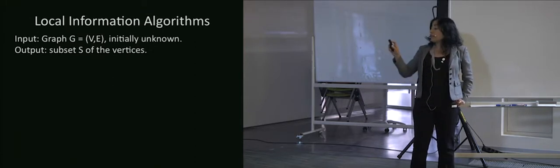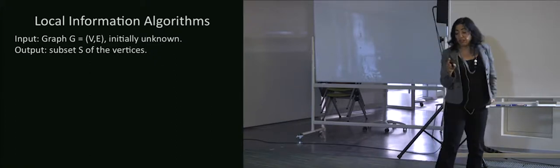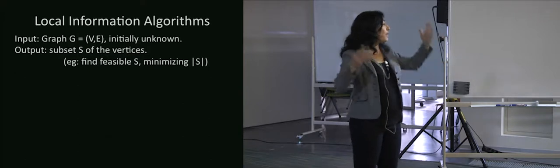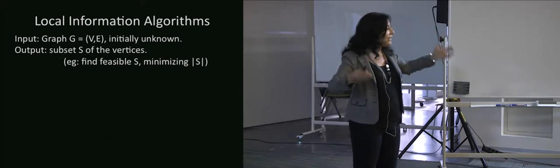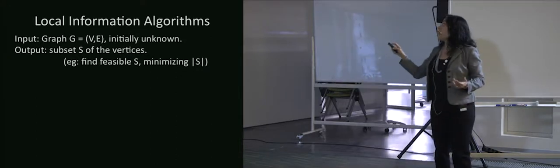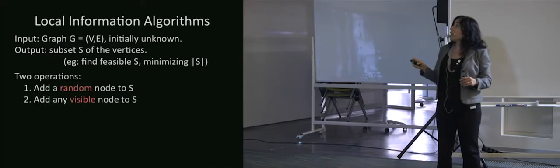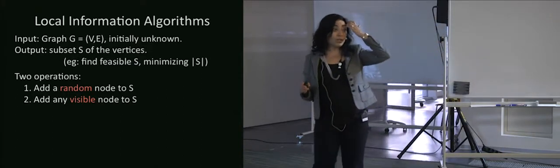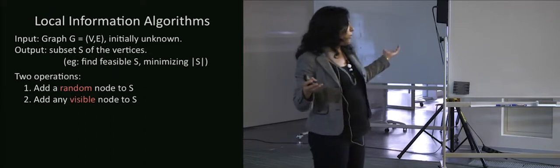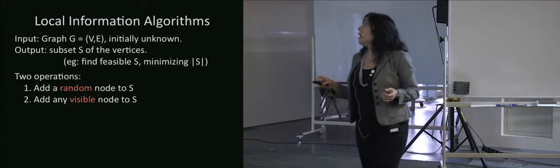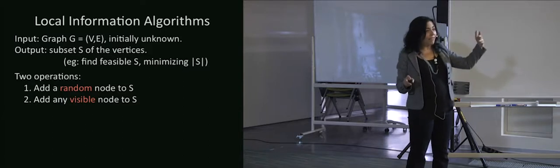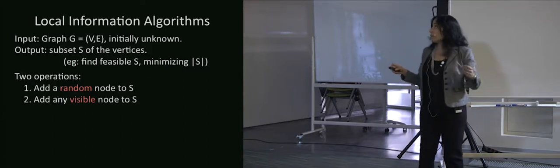By 'local' I mean here that the graph topology is revealed locally as the algorithm builds its output set. I'm going to give a model of this, then talk about preferential attachment graphs, then about the minimum dominating set problem on a general network. I start out with a graph I don't know. My output is going to be a subset of the vertices. I want to find the feasible set — the one which satisfies the constraint — and specifically the smallest one. There are two operations: I can add a uniformly random node, or I can add any visible node.